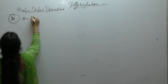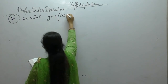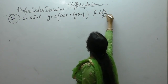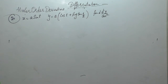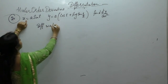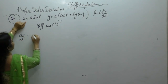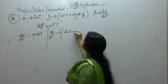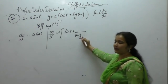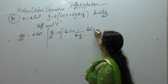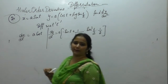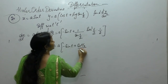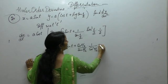Next problem: if x equals a sin t and y equals a times (cos t plus log tan(t/2)), find d²y/dx². These are functions of t. Differentiate with respect to t. dx/dt: derivative of sin is cos t. dy/dt: derivative of cos is minus sin t, plus derivative of log tan(t/2). Derivative of log is 1 upon tan, and derivative of tan is sec². Times derivative of t/2 which is 1/2.